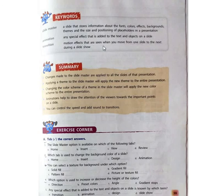Keywords: Slide Master — a slide that stores information about the fonts, colors, effects, backgrounds, themes, and the size and positioning of placeholders in a presentation. Animation — any special effect that is added to the text and objects on a slide. Transition — motion effects that are seen when you move from one slide to the next during a slide show. Write down these keywords and the summary on your notebook.